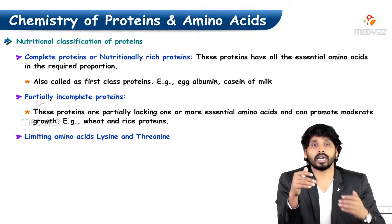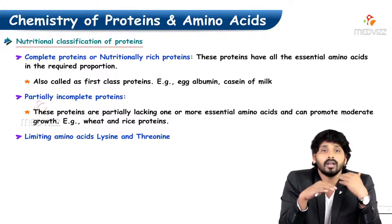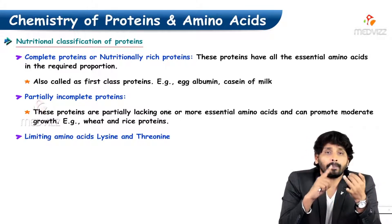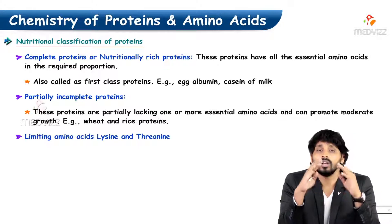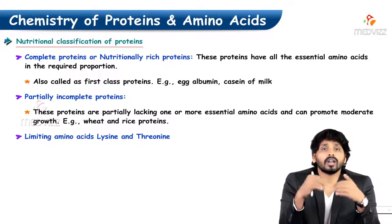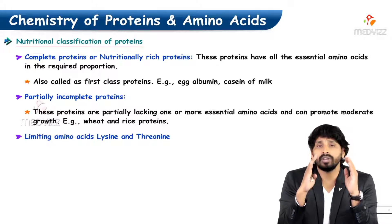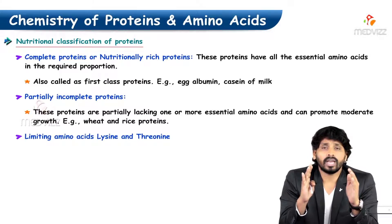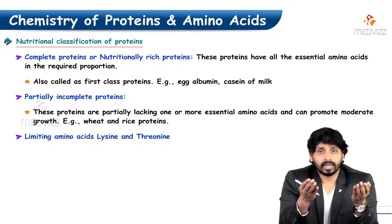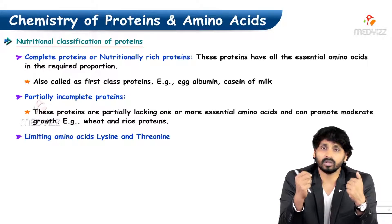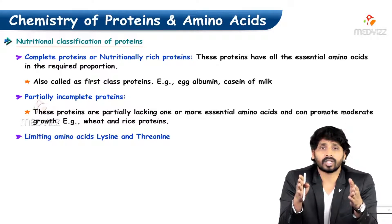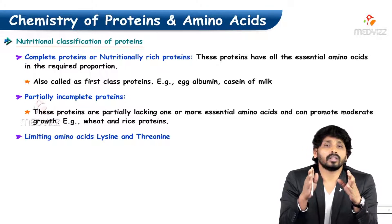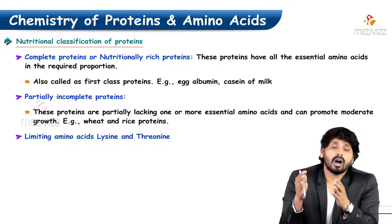Coming to the final classification, that is nutritional classification of protein. There are three types of proteins based on nutrition: complete protein, partial incomplete protein, and incomplete protein. Complete protein, or nutritionally rich protein, means that out of 20 amino acids, 10 are essential amino acids which must be taken in the diet for protein synthesis. If a particular food substance has all 10 essential amino acids, that protein is known as complete protein or nutritionally rich protein.